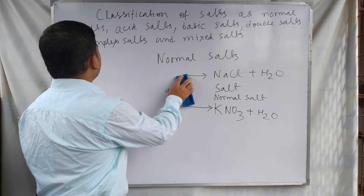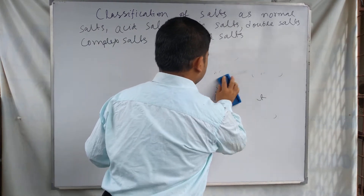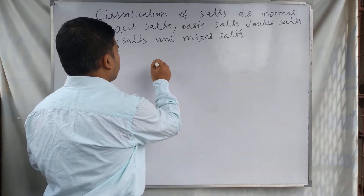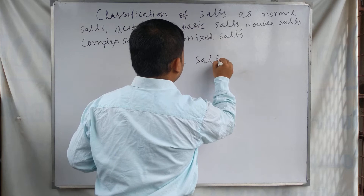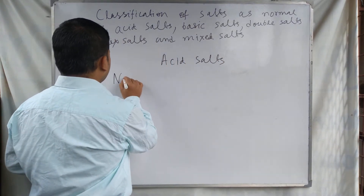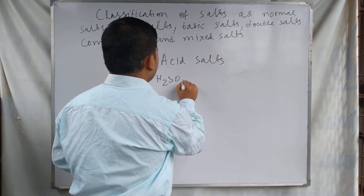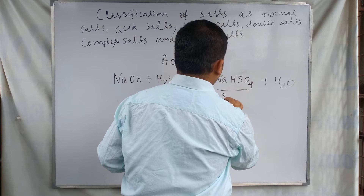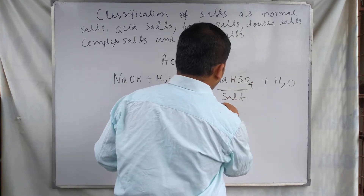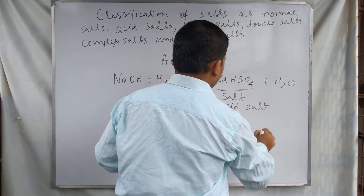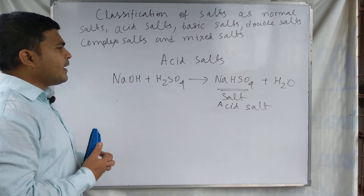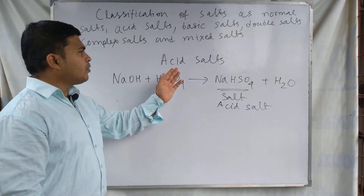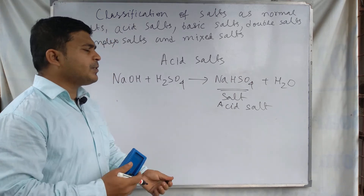The next type of salt is acid salts, or acidic salts. For example, sodium hydroxide reacting with sulfuric acid produces sodium hydrogen sulfate and water. This type of salt is called an acid salt because salts that have a replaceable hydrogen atom in their molecules are called acid salts. For this reason, sodium hydrogen sulfate is an example of acid salts.